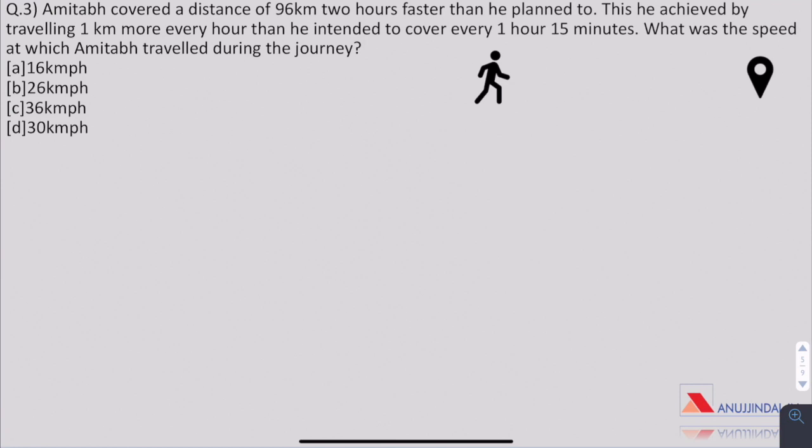Question 3. Amitabh covered a distance of 96 kilometers 2 hours faster than he planned to. This he achieved by traveling 1 kilometer more every hour than he intended to cover in every 1 hour 15 minutes. What was the speed at which Amitabh traveled during the journey? So as given in the question distance is 96 kilometers and he traveled 2 hours faster.